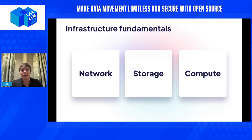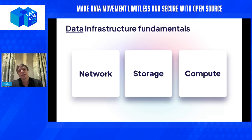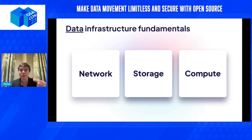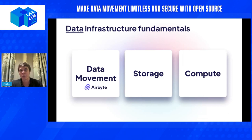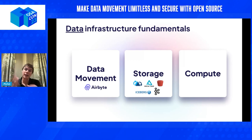AWS built every single one of their products on top of those fundamentals, and data infrastructure is really not that different. The key takeaway is to apply these same fundamentals to your data infrastructure — we're just renaming things: network becomes data movement, storage is about managing your source of truth, and compute becomes processing — how you extract insight and make data valuable.